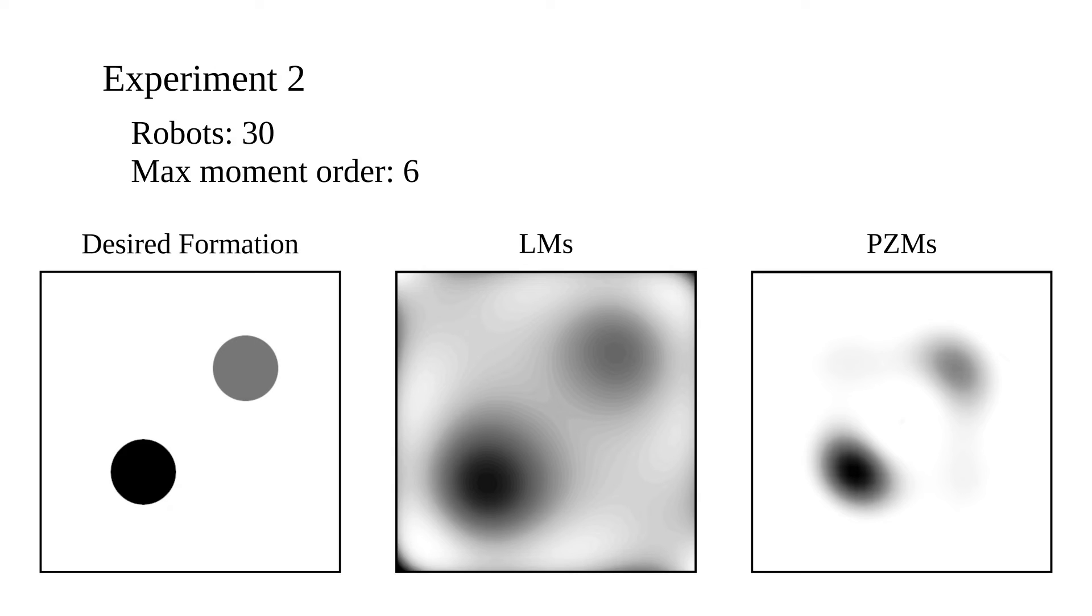Experiment 2 used 30 robots in 6th order Legendre moments and 6th order Pseudo-Zernike moments to represent the two discs. In both trials, the robots were able to form the desired shape. There should be twice as many robots at the leftmost disc. However, the size of the robots coupled with their collision avoidance prevents 20 robots from fitting inside the boundaries of the denser disc.